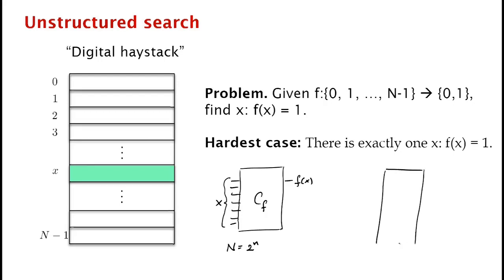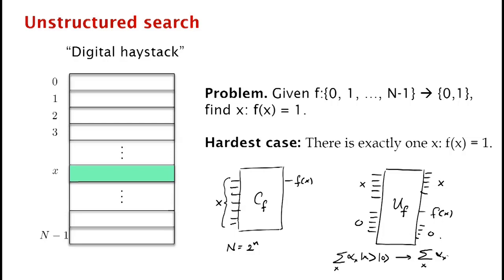Quantumly, what do we get to do? Well, quantumly, we can make up a quantum circuit for f, and it takes as input x, a bunch of zeros, outputs x, f of x, a bunch of zeros. And so the whole point here is that we can evaluate x and f in superposition. So we can evaluate sum over x, alpha x, x, 0 goes to sum over x, alpha x, x, f of x.